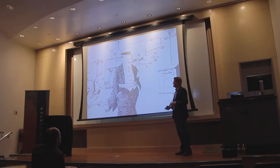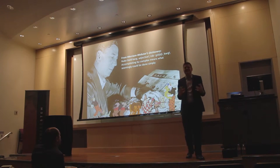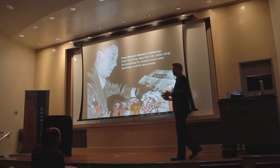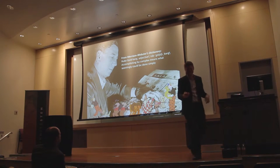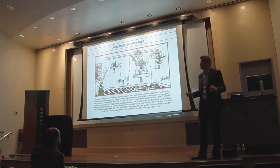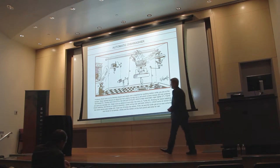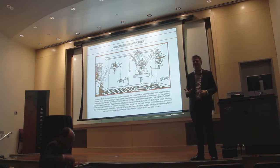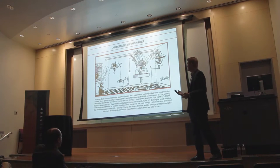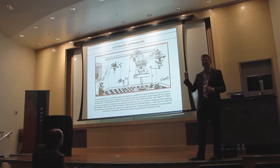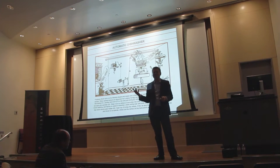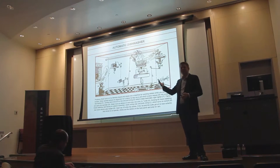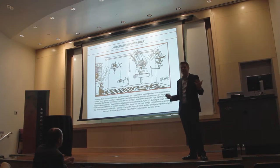Rube Goldberg is about completing a simple task in an overly comedic but complex way. He's actually an adjective in the dictionary — you might have heard this used in many different contexts, from describing health care to government public school funding situations. This is an example of one of his cartoons — an automatic dishwasher — where there's a whole series of steps labeled A, B, C. It's all cause and effect, which is a great connection for elementary and middle school kids learning linear sequences. Interestingly, he actually never built any of these machines. He was an engineer who designed sewers for six months for the city of San Francisco, then decided that job stank, moved on to cartooning, found his passion, and won the Pulitzer Prize.